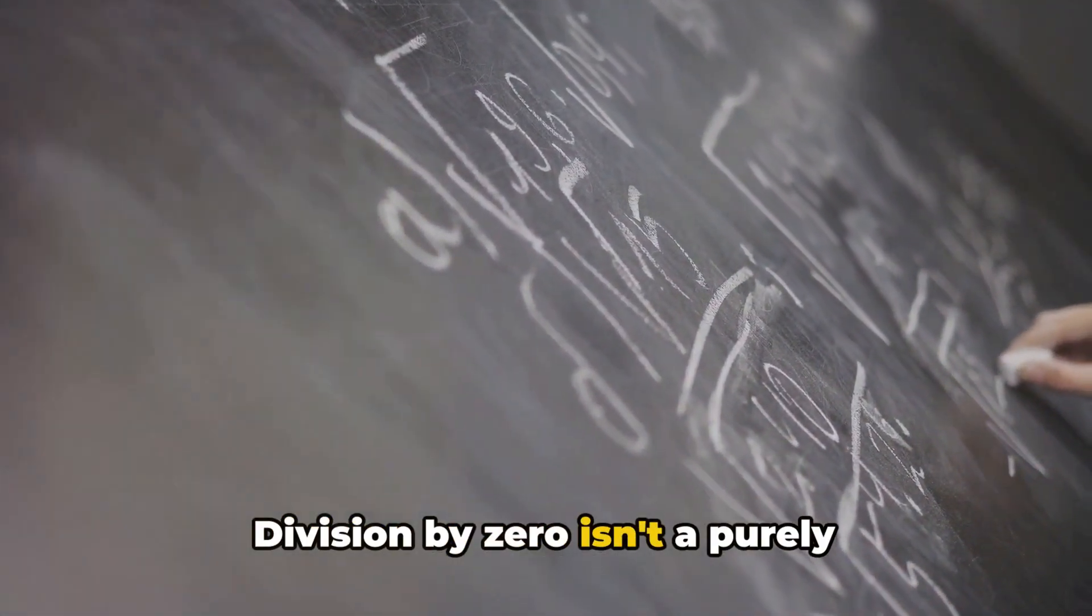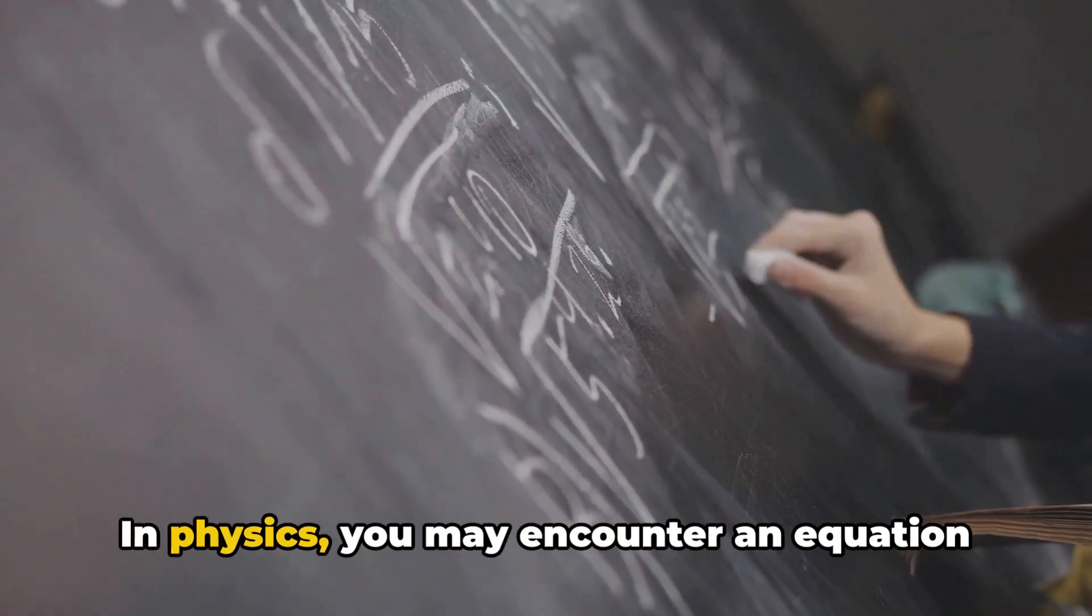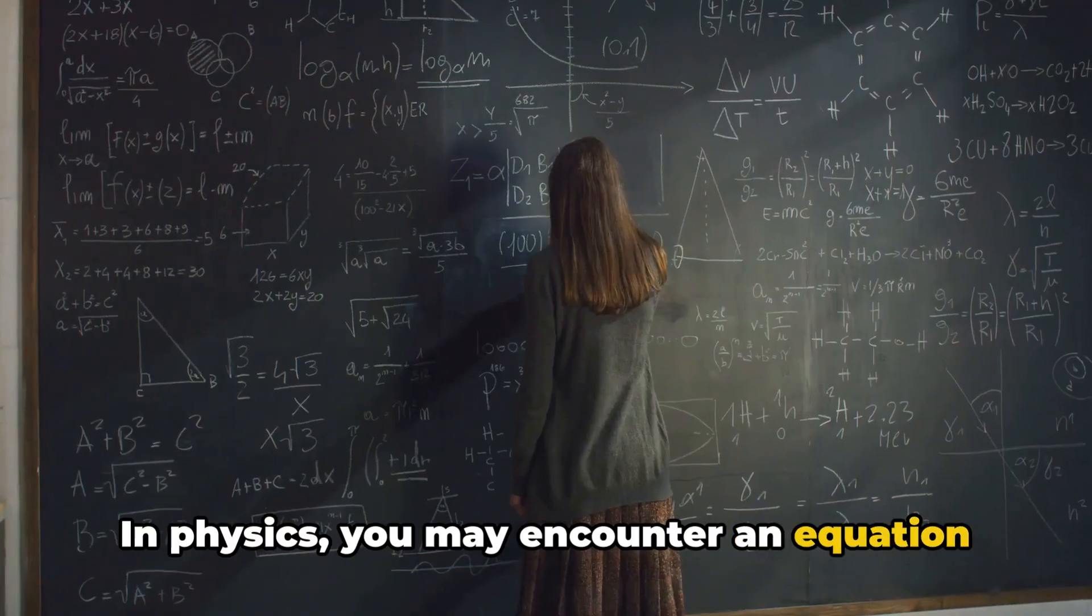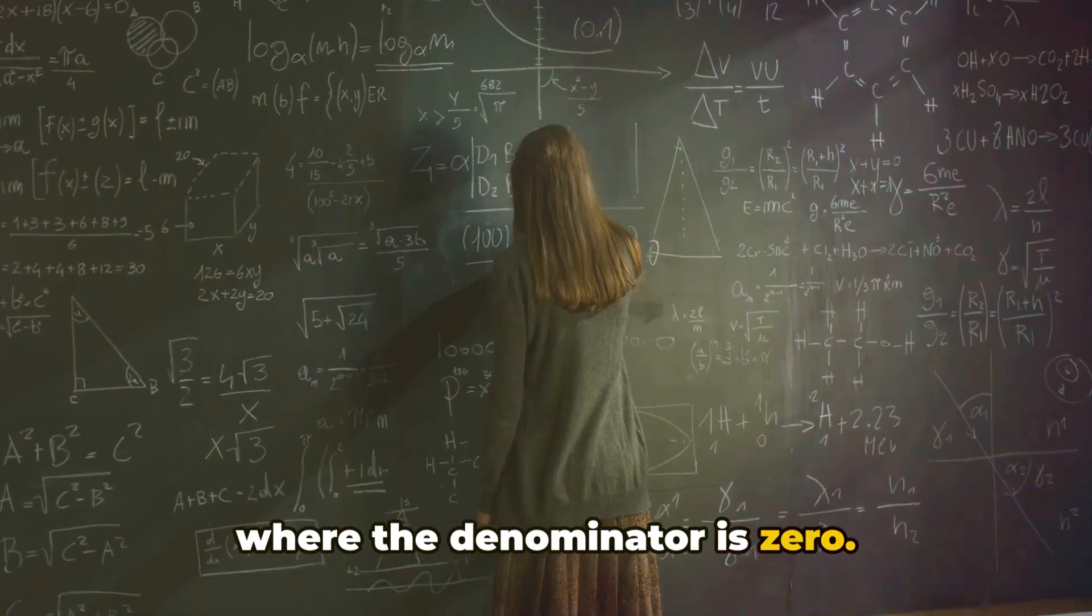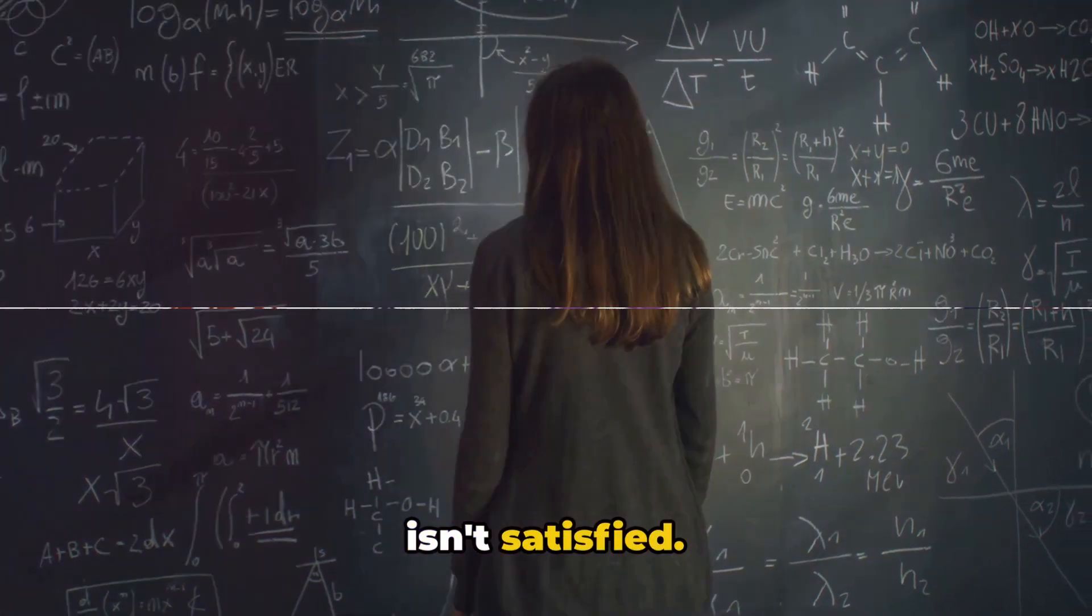Division by zero isn't a purely theoretical concept. It can surface in real-world scenarios. In physics, you may encounter an equation where the denominator is zero. This usually signifies that something isn't happening or a certain condition isn't satisfied.